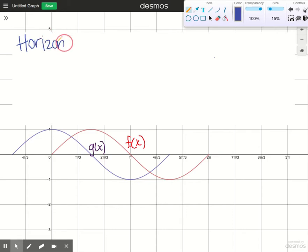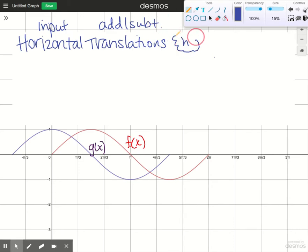So before I even go to find coordinates or write an equation, I know that because it's horizontal, it's occurring as part of the input of the function. And because it's a translation, it's going to be adding or subtracting. That lets me know that this parameter is going to be h. So I know that I will be adding or subtracting h to the input of the function.